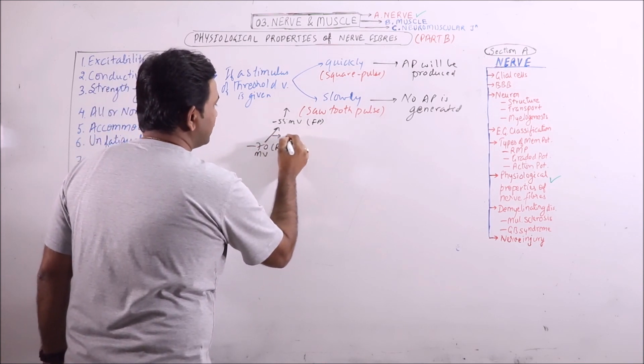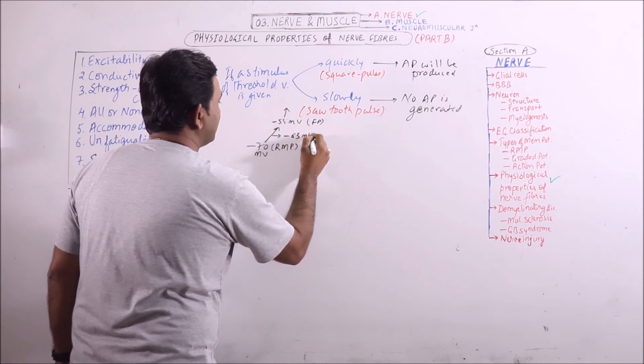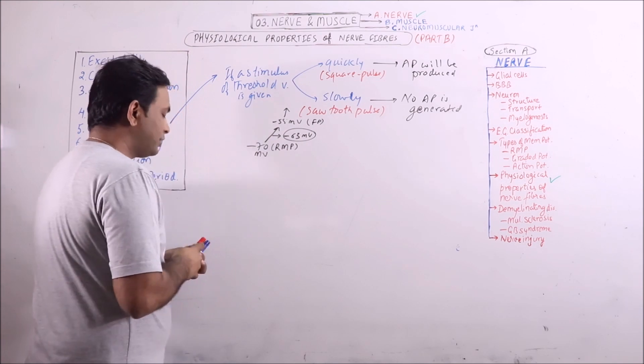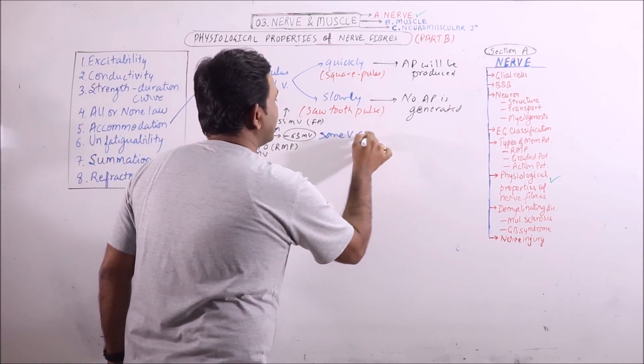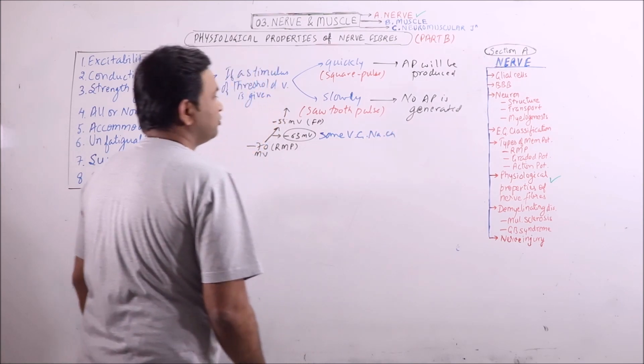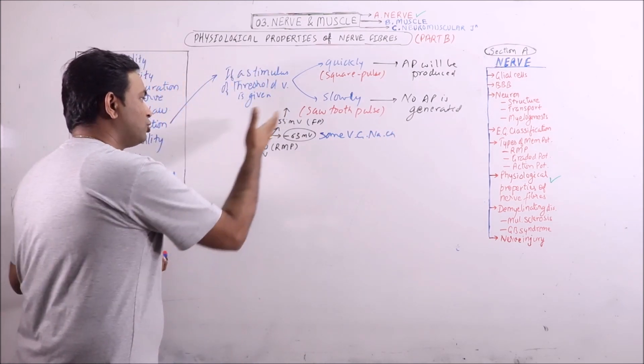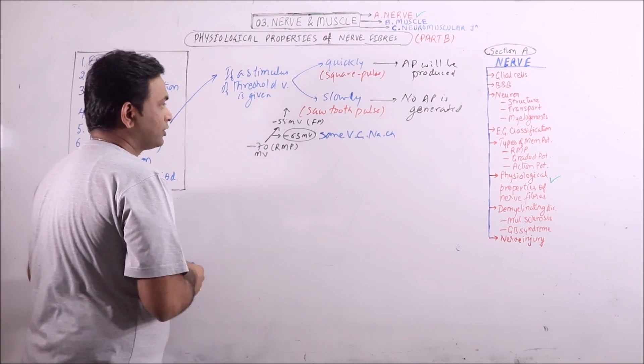In between this there is a point of minus 63 millivolts at which some voltage gated sodium channels are also stimulated. That also contributes in reaching the firing potential.